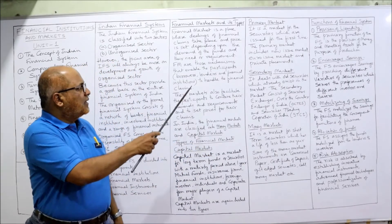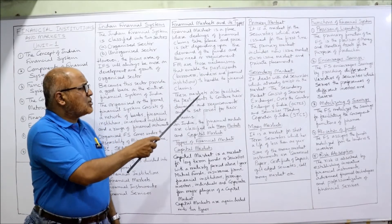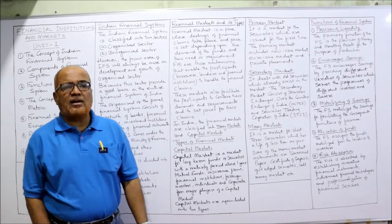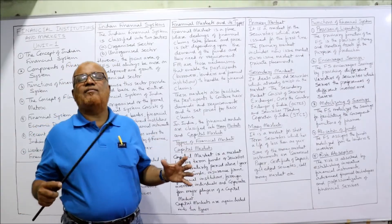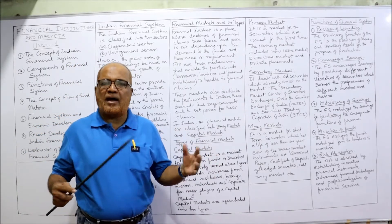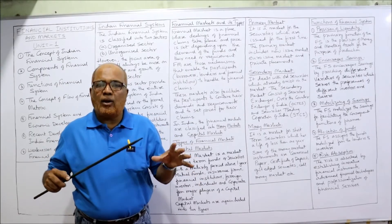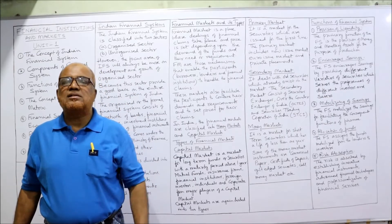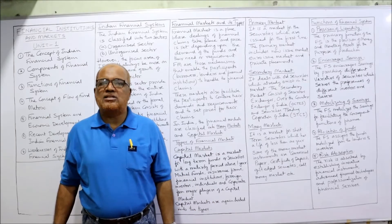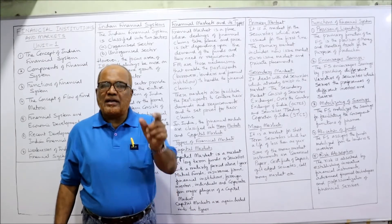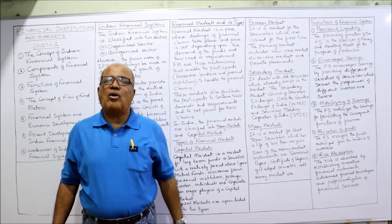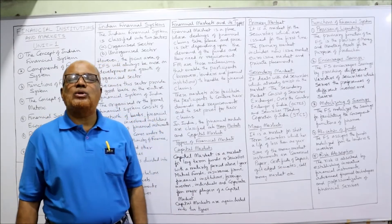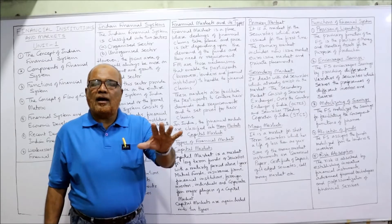These markets facilitate participants to combine their demand and requirements and set prices of their claims. All participants in the financial markets — borrowers, lenders, financial institutions, and banks — play a role in borrowing and lending finance and setting the prices of claims in the form of shares, bonds, and securities. Prices are fixed by the interaction of these participants.